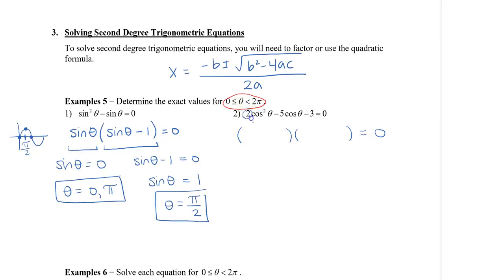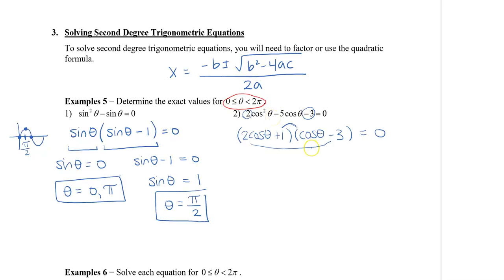The only numbers that multiply to 2 at the beginning give us 2cosθ in one bracket and cosθ in the other. My last term is negative 3, and the only pairs are 1 and −3, or −1 and 3. Since the middle term is −5, I need 2 times −3 to get −6, then add 1, because 1 times cosθ gives positive 1, so −6 + 1 = −5. Distributing confirms we get 2cos²θ − 5cosθ − 3.